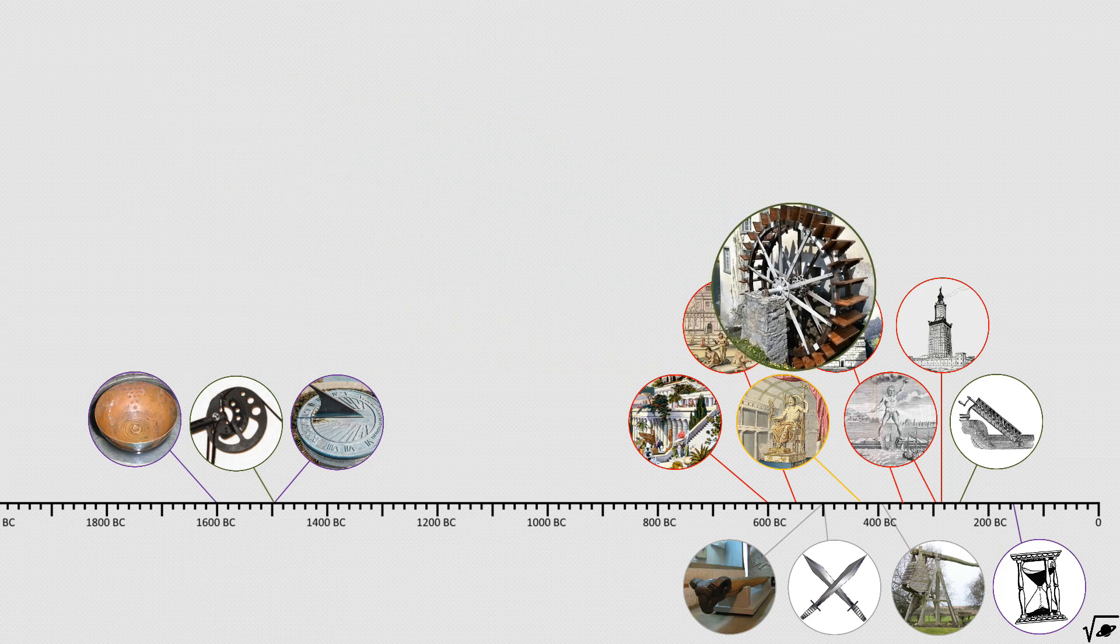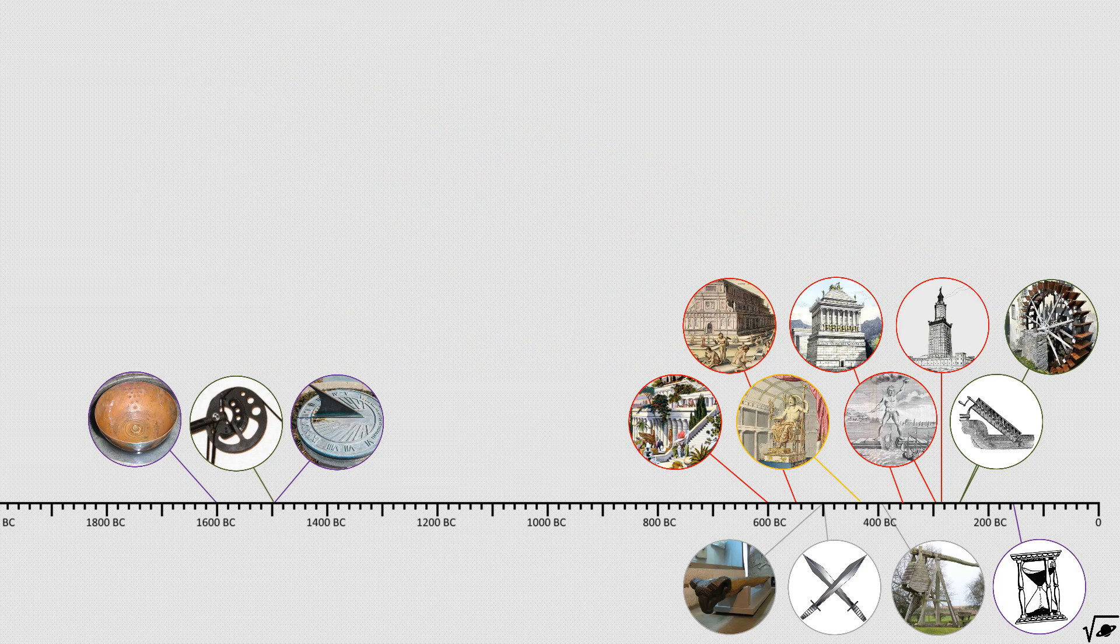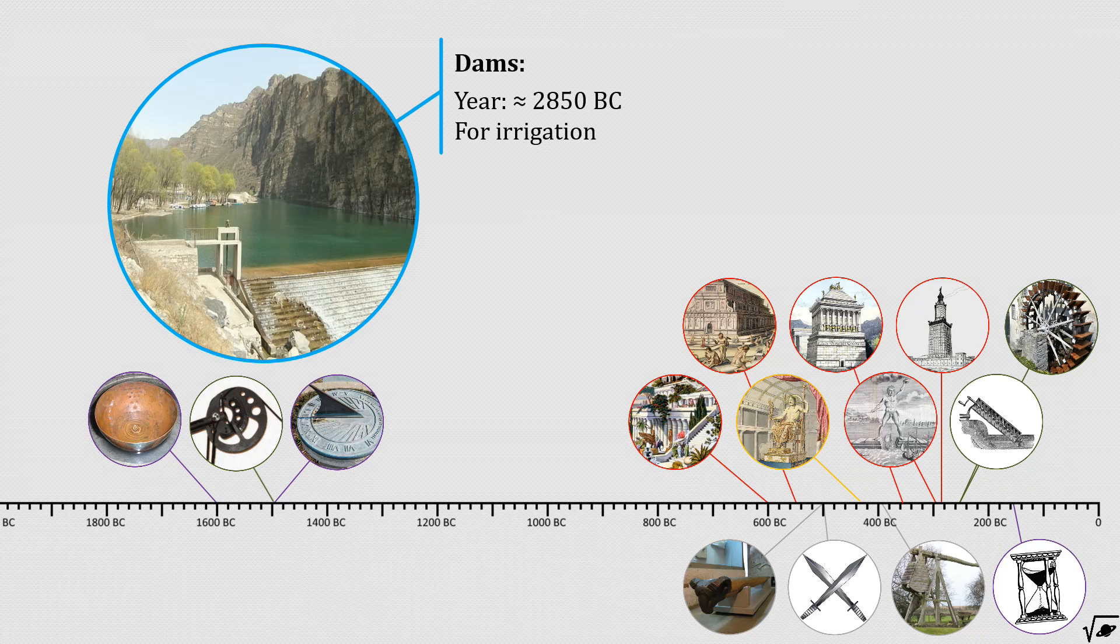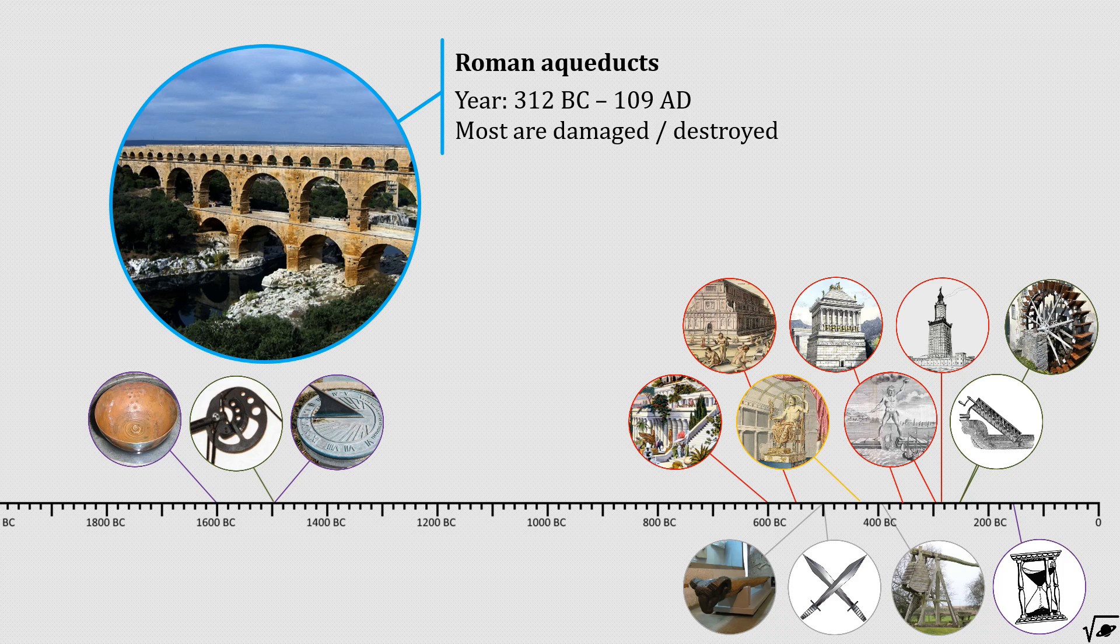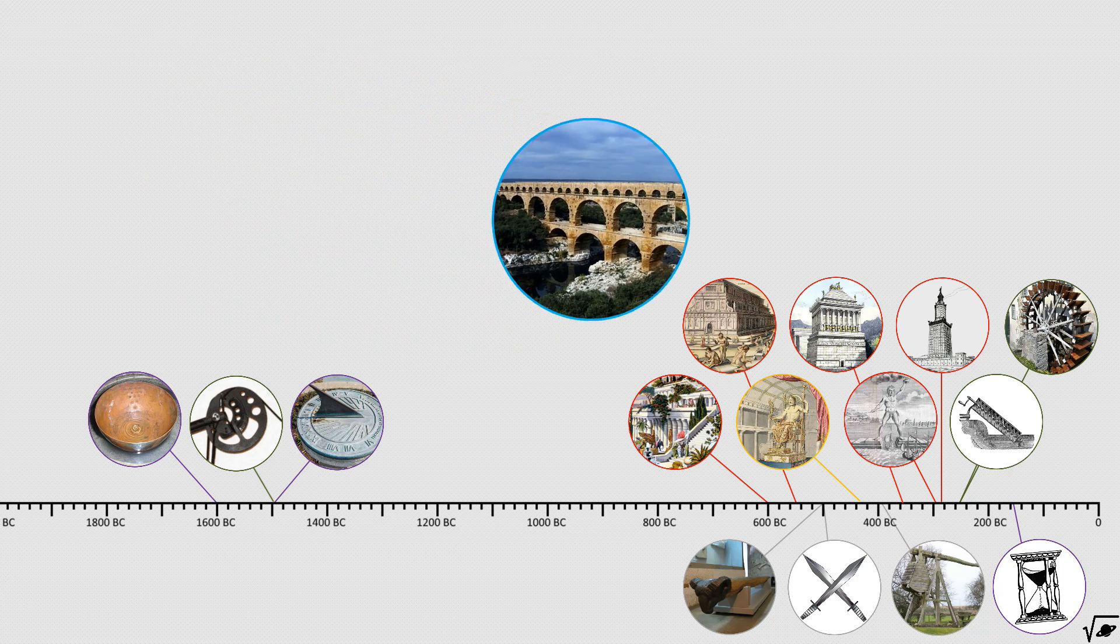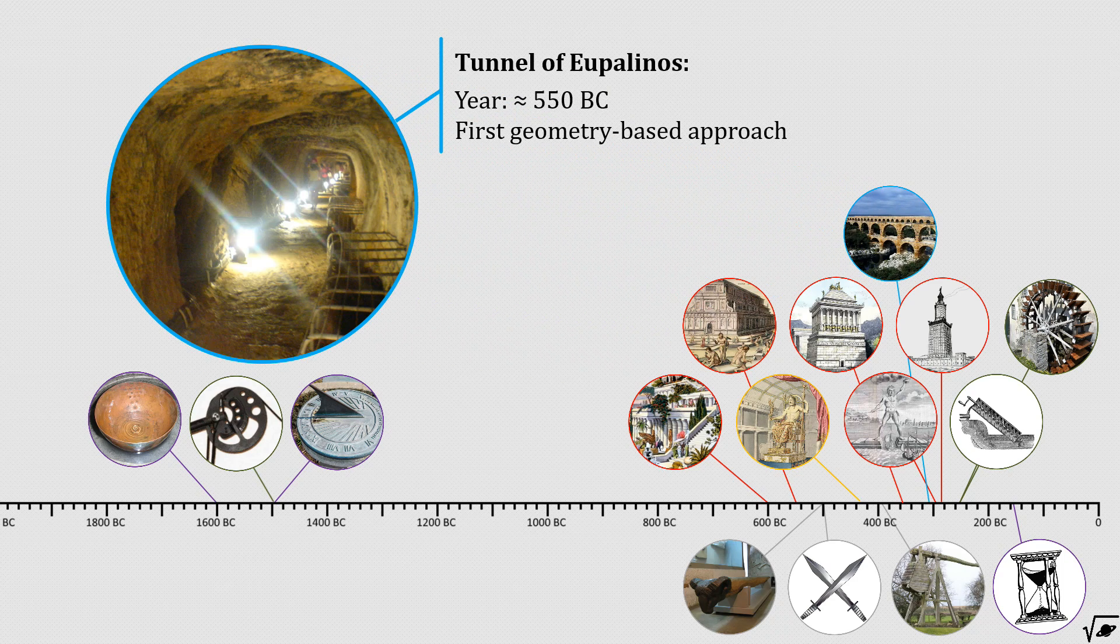But engineering with water wasn't new, because long before in the field of hydraulic engineering, the Egyptians started building dams for their agriculture, the Romans started building their famous aqueducts, and the Greeks built a kilometer long tunnel used for water transportation.